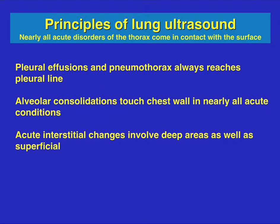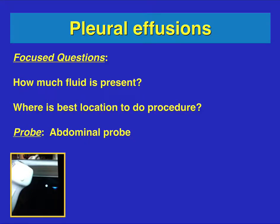Pleural effusions almost always reach the pleural line, so when you look at different areas of the lung, you may see pleural effusions in different locations. The specific questions we ask are: first, how much fluid is present — small, moderate, or large? We're not trying to quantify exactly how much, just a general idea. The second question is: where is the best location to do the procedure? Most of the time in the ICU or emergency setting, we are only doing chest tubes in the mid-axillary line, but radiology may address loculated collections in the posterior or anterior region.